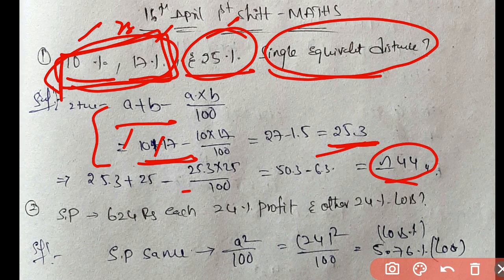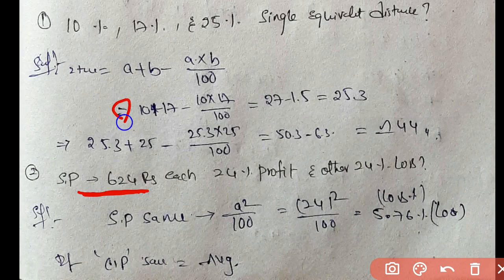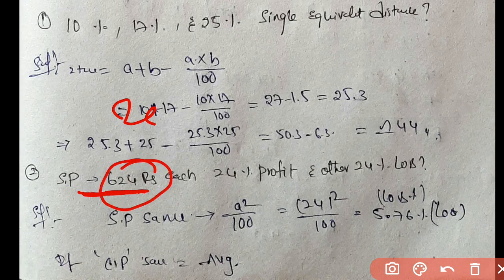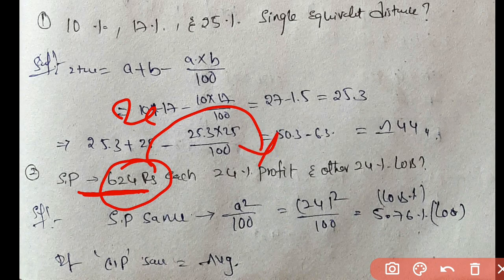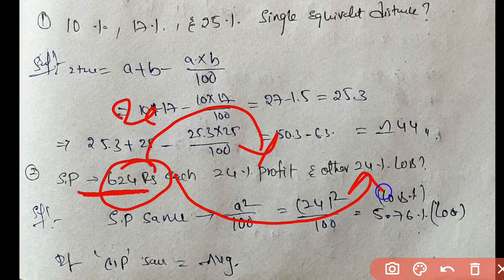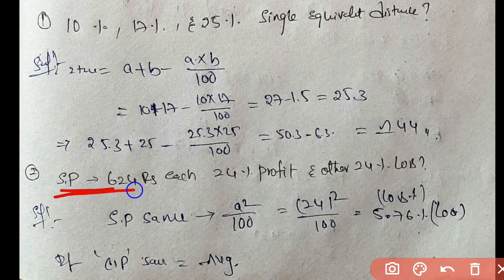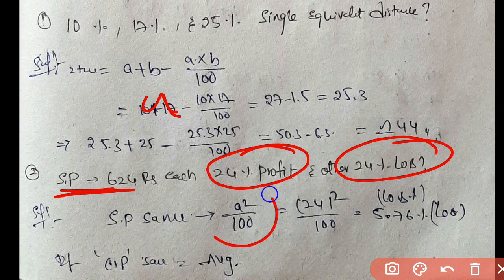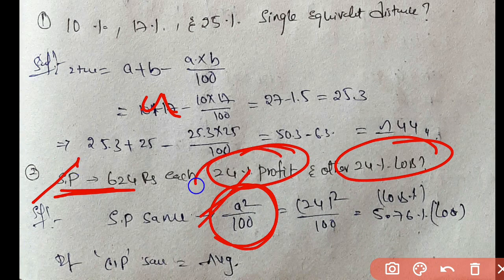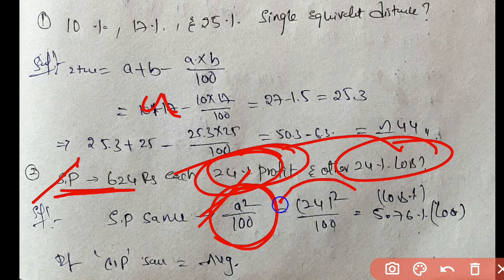One item sold at 624 rupees. One had 24% profit, other had 24% loss. Overall profit or loss? When selling price is same, direct formula is a squared by 100. 24 squared by 100 equals 5.76% loss.